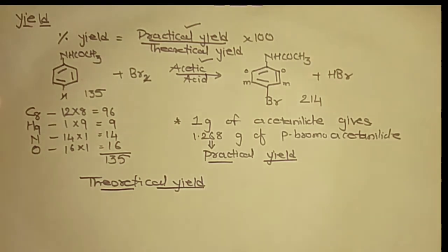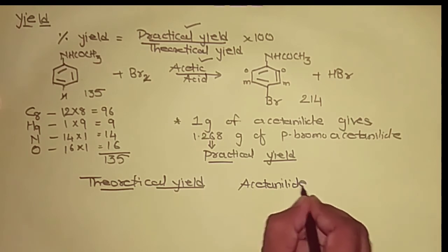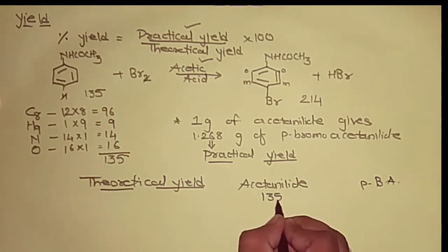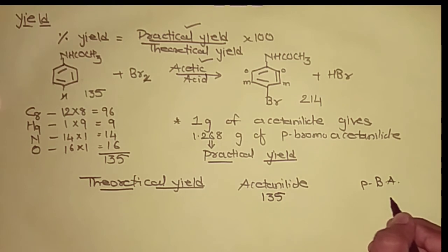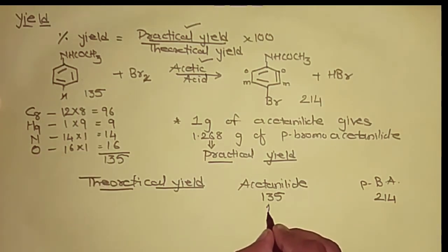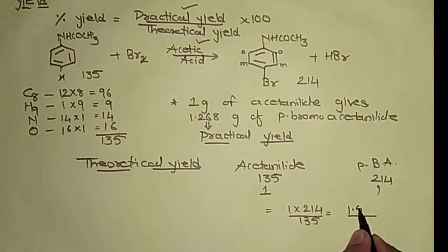We say that 135 grams of acetanilide produces 214 grams of parabromoacetanilide. So 1 gram of acetanilide, then how much amount of parabromoacetanilide is expected? 1 into 214 divided by 135. So this amount will give us theoretical value. Its answer is 1.585. So this we call it as theoretical yield.